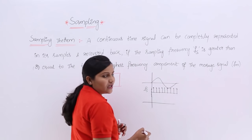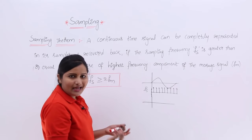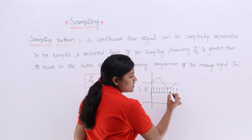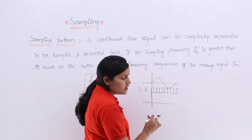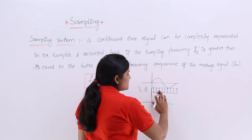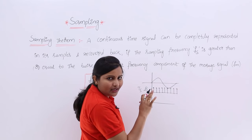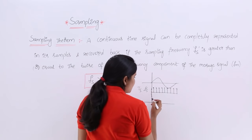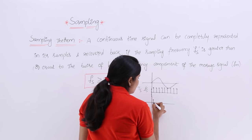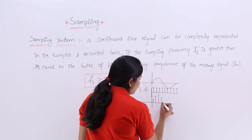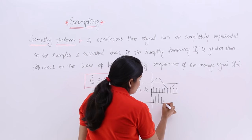The time period ts is the time period between the samples. By multiplying the pulse train with the continuous signal, you can completely represent your continuous signal into its samples.